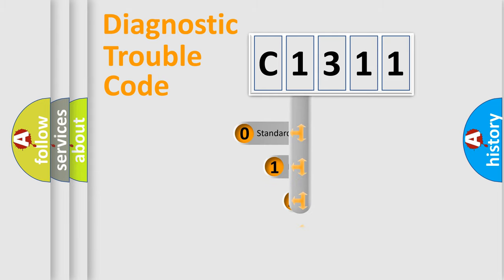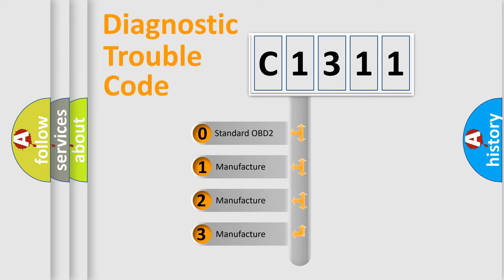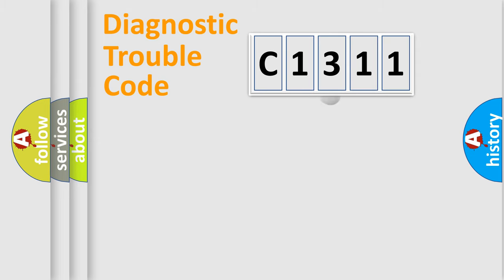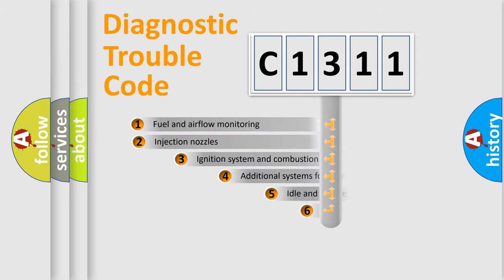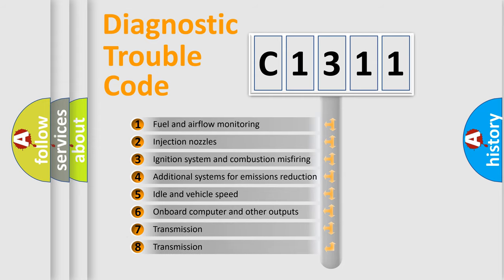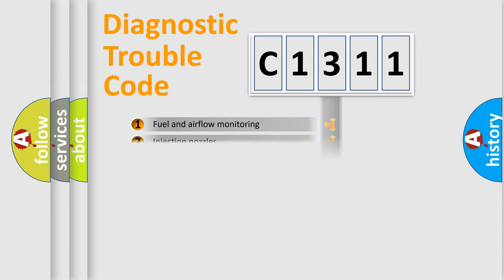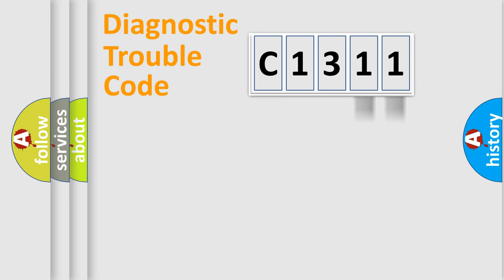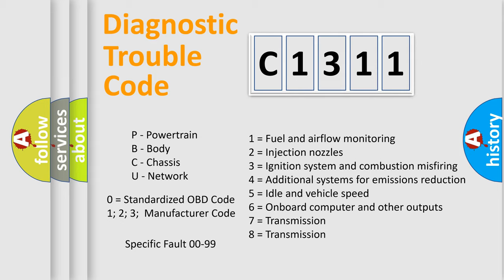This distribution is defined in the first character of the code. If the second character is expressed as zero, it is a standardized error. In the case of numbers 1, 2, or 3, it is a more specific expression of a car-specific error. The third character specifies a subset of errors, and this distribution is valid only for the standardized DTC code. Only the last two characters define the specific fault of the group, and this division is valid only if the second character is expressed by the number zero.